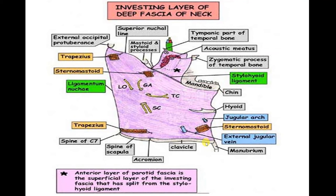The lower attachments begin at the C7 cervical spine, then the spine of the scapula, the acromion process of the scapula, the borders of the clavicle, and finally the manubrium sterni up to the jugular notch (suprasternal notch). This completes the lower extent of the investing layer.